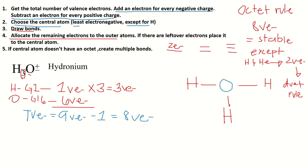Step 4: allocate the remaining electrons to the outer atoms. We already used two, four, six electrons in our diagram to form bonds, so we subtract 6 from 8. That leaves us with 2 valence electrons. We put the remaining electrons on the outer atoms. Note that hydrogen is already happy with two valence electrons, so there's no need to add electrons to hydrogen.